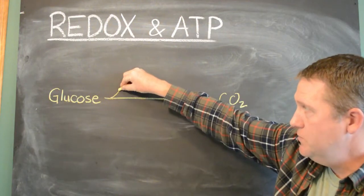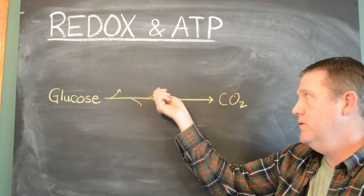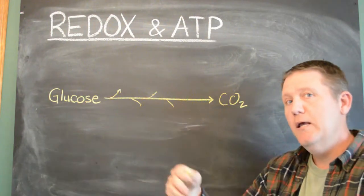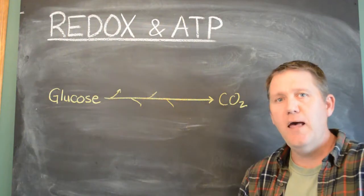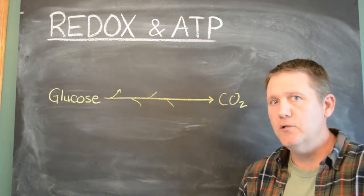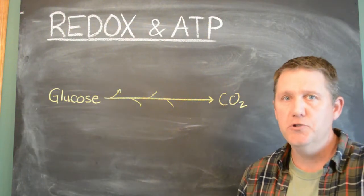And along the way, each little step transfers some electrons off, and a little more, and a little more, and a little more, each time pulling little bits of energy out of that glucose. A few more calories every single time, and transferring them to ATP and other molecules too.